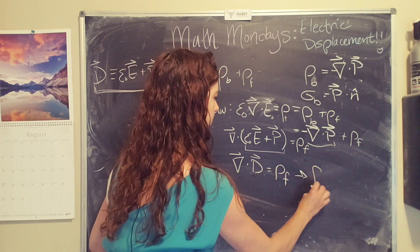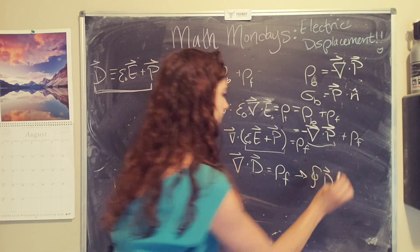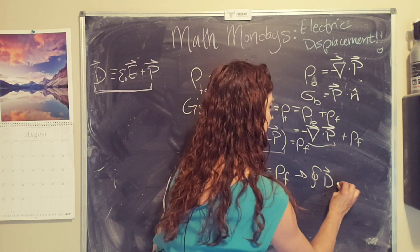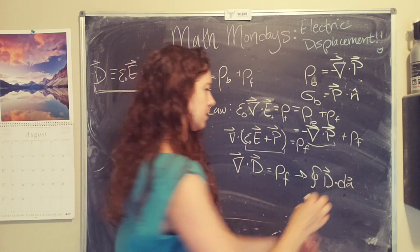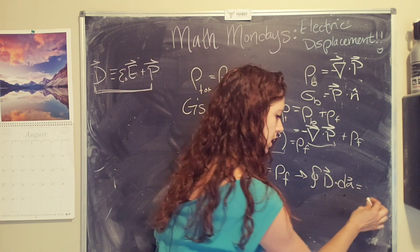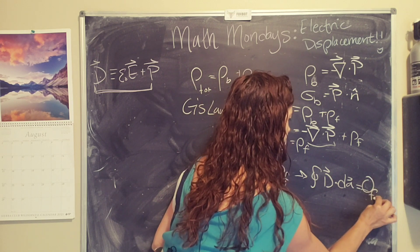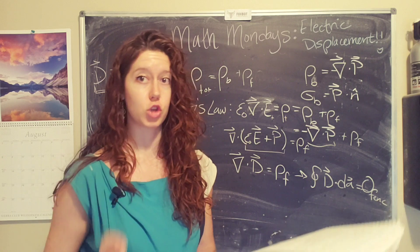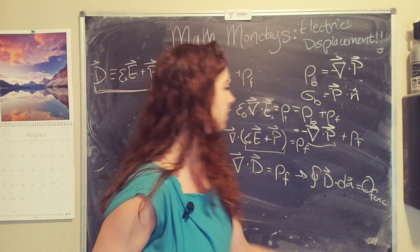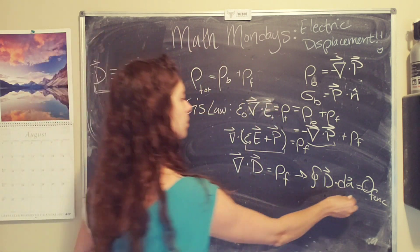Or in integral form, the surface integral of the electric displacement dot dA equals the free enclosed charge. So that is the total free charge enclosed in your Gaussian volume dA.